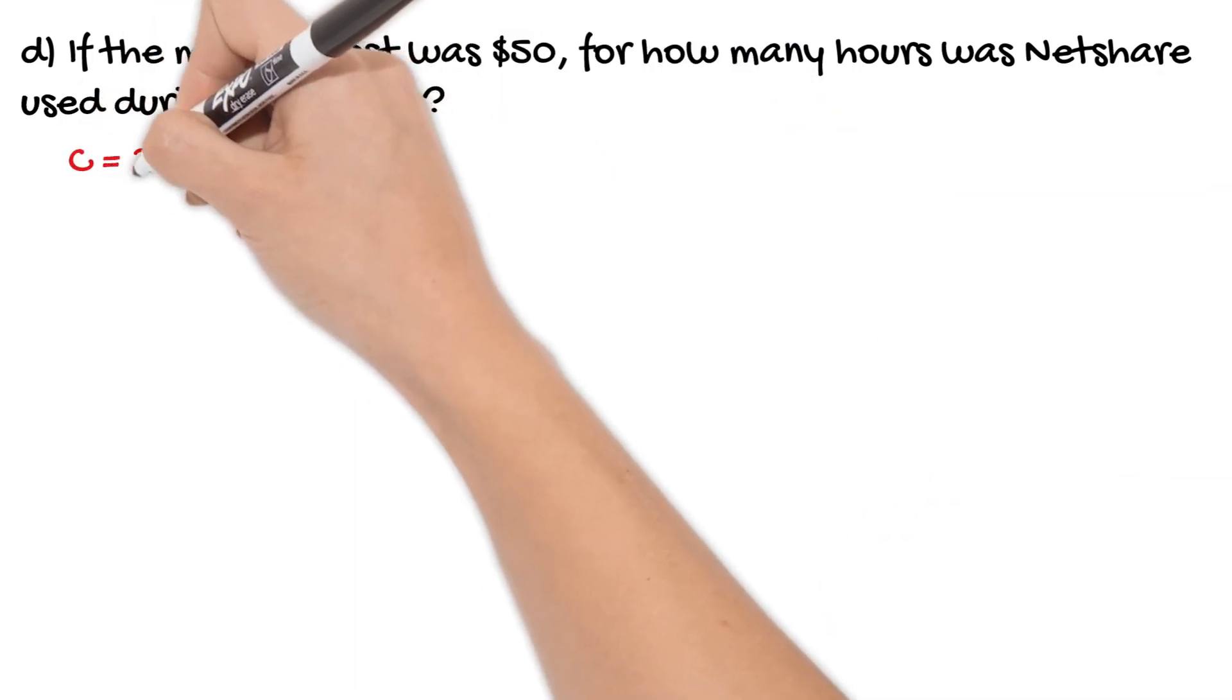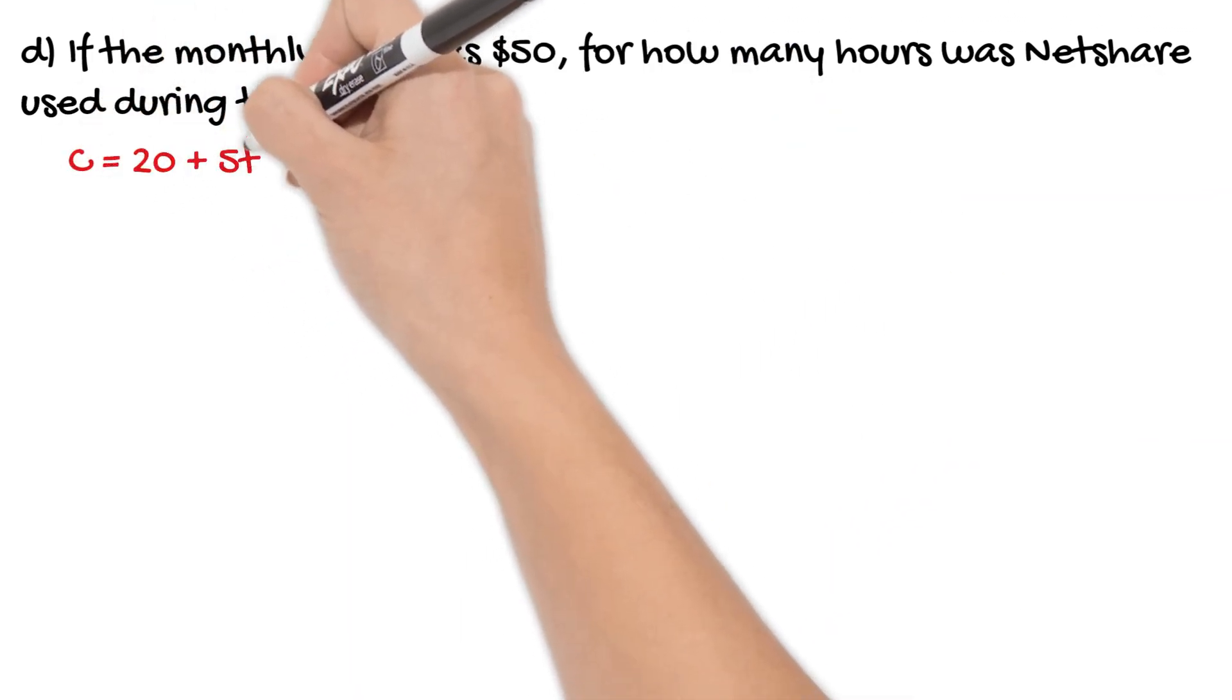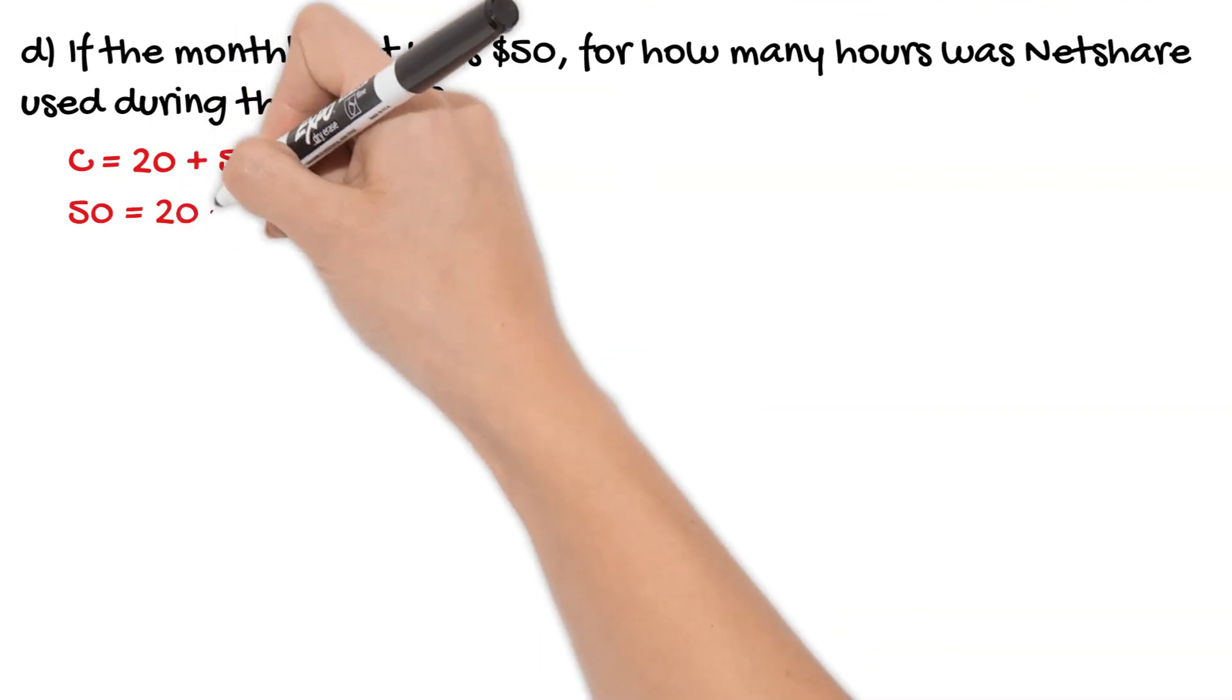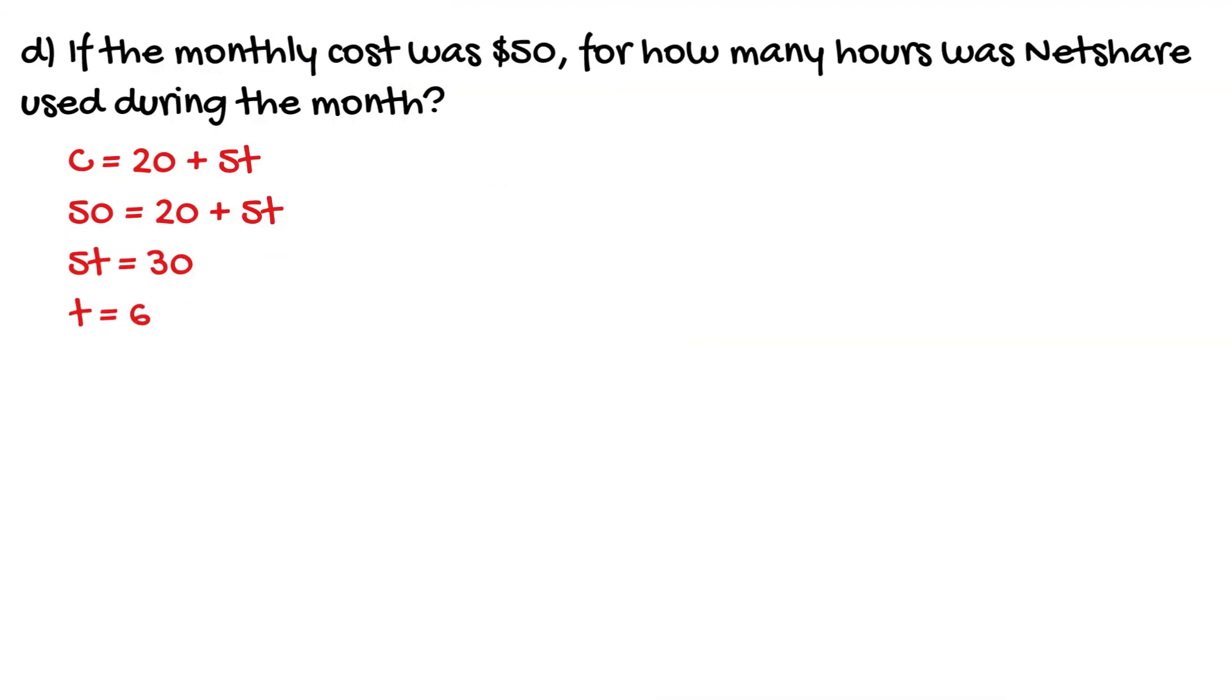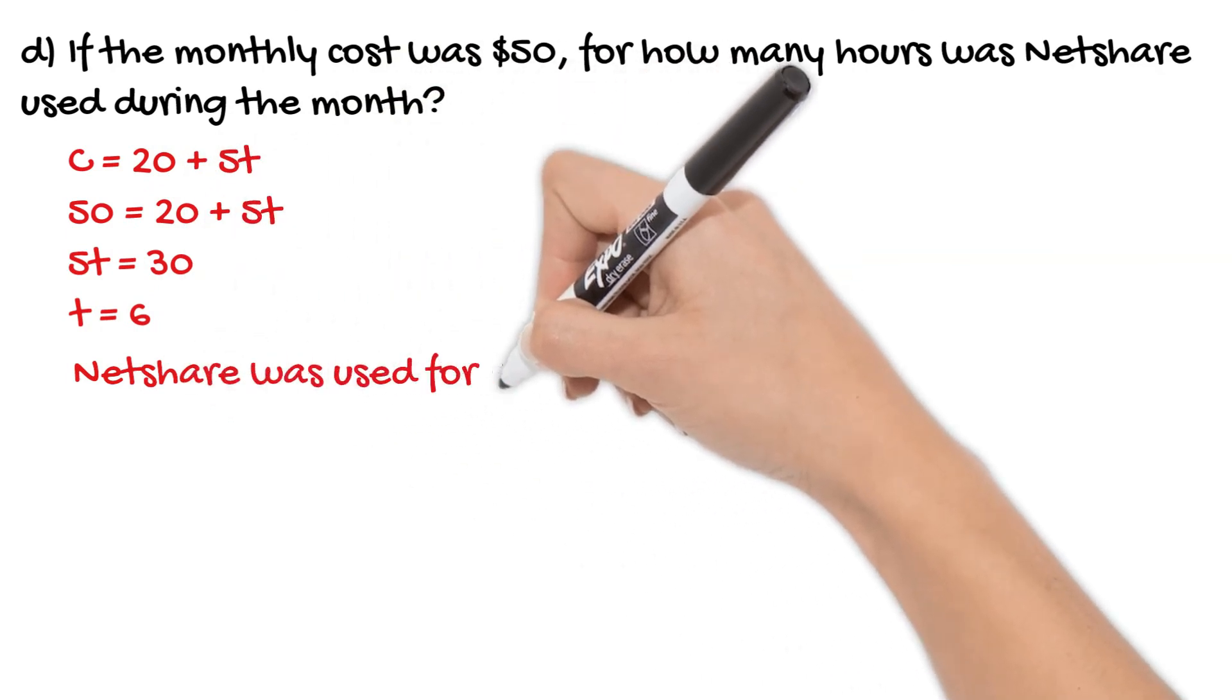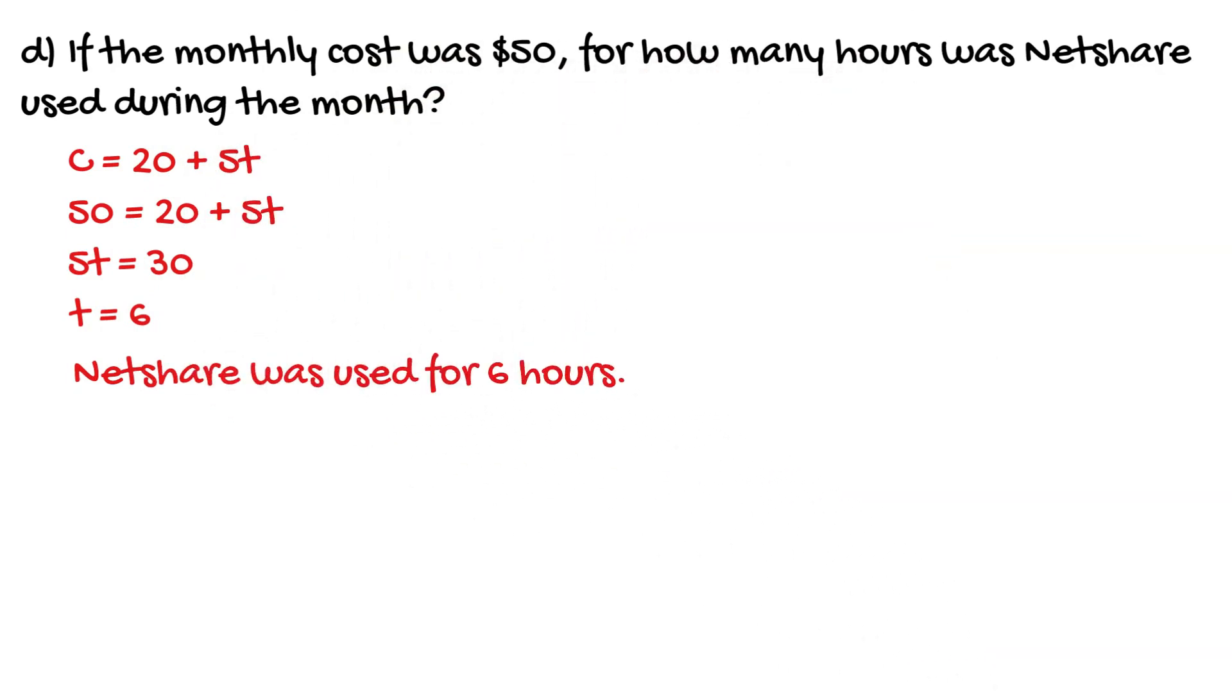You write out your rule: C = 20 + 5T. You sub in what you're given. You're told that C = 50, so 50 = 20 + 5T. Then you use your algebra skills to solve that. We're going to subtract 20 from both sides, which gives us 5T = 30. And of course, T = 6 after you divide by 5. So 6 hours would be your answer.